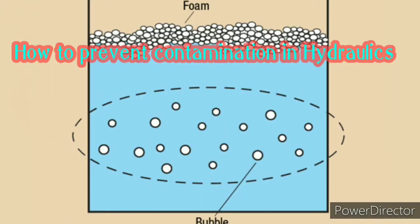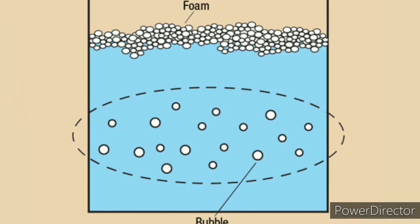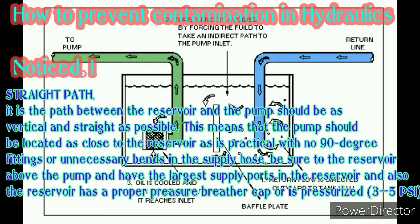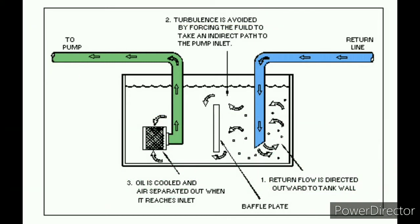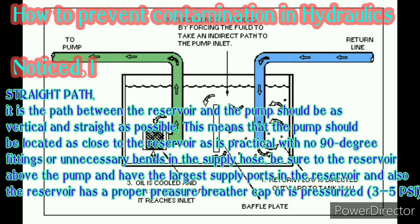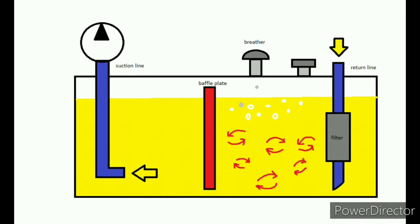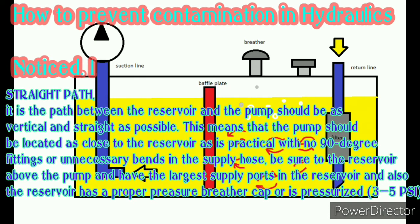How to prevent contamination in hydraulics. Straight path: the path between the reservoir and the pump should be as vertical and straight as possible. The pump should be located as close to the reservoir as practical, with no 90-degree fittings or unnecessary bends in the supply hose. Be sure the reservoir is above the pump, and use the largest supply port in the reservoir with a proper pressure breather cap pressurized to 3 psi.